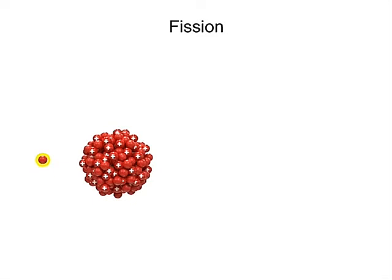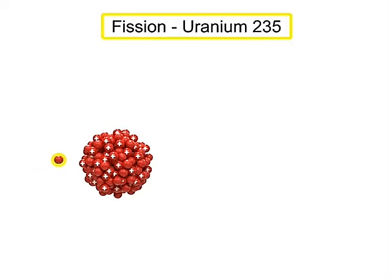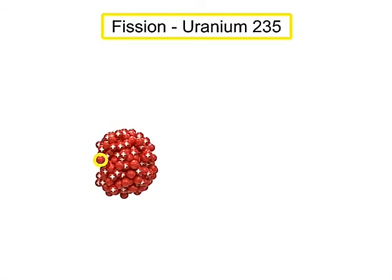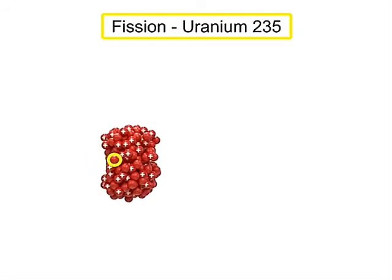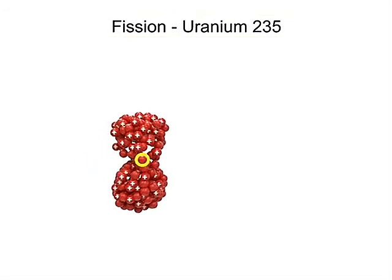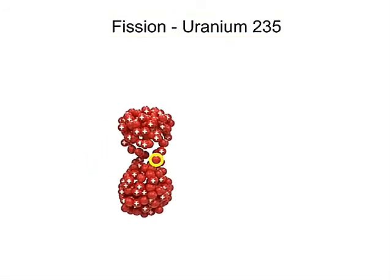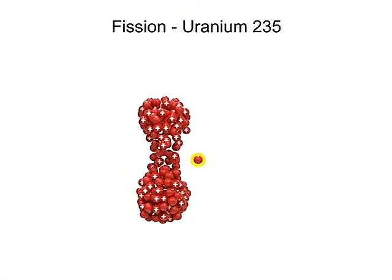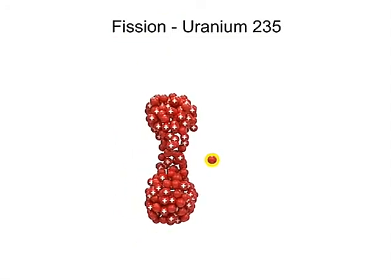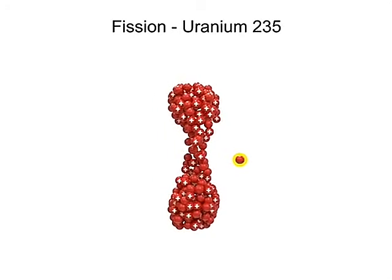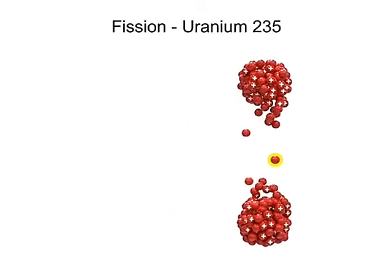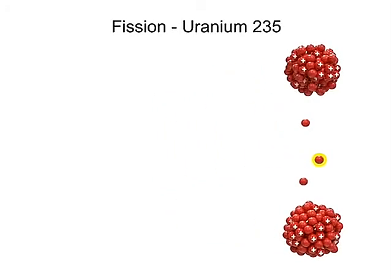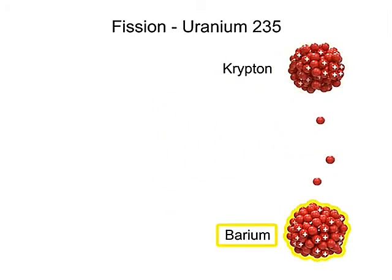Thus, when a fast-moving neutron collides with the nucleus of uranium-235, it is stretched into an elongated shape. This elongated shape tips the balance in favor of the repulsive forces and the uranium-235 atom splits into fragments of krypton and barium.